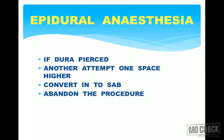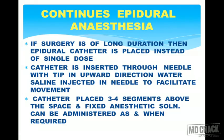If the dura is accidentally punctured — that is, you are in the dura instead of the epidural space — the immediate action is to withdraw the needle and make another attempt one space higher, or convert to a subarachnoid block. The safest option is to abandon the procedure, especially with inexperienced hands, as there is a high chance of piercing the dura again. In such cases, employ another technique, probably general anesthesia.